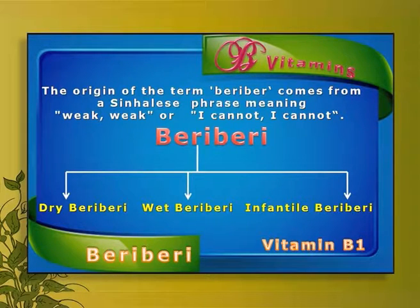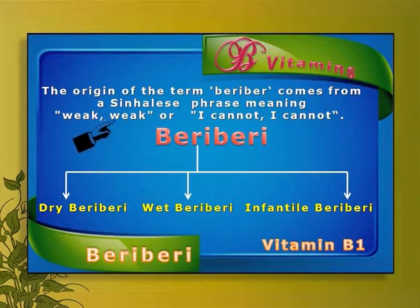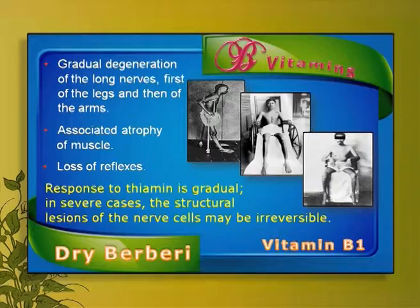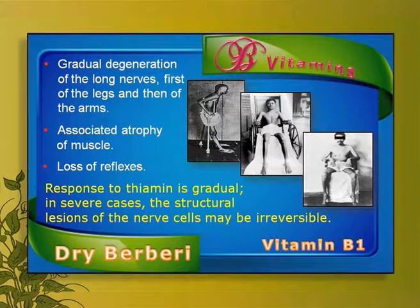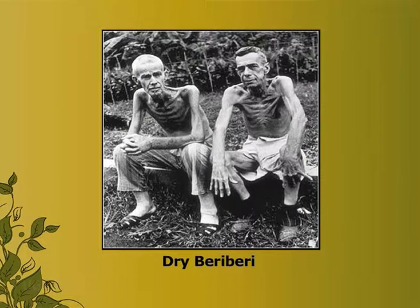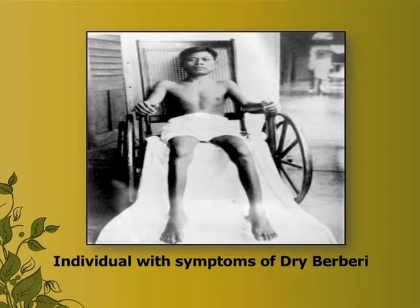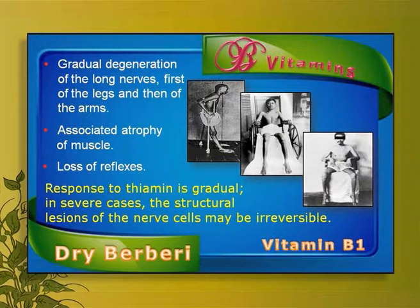There are three types of beriberi: wet beriberi, dry beriberi, and infantile beriberi. The word beriberi comes from the Sinhalese word meaning weak or 'I cannot.' The symptoms of dry beriberi include gradual degeneration of the nerves, especially the long nerves present in the hands and legs. There is concomitant atrophy of the muscles innervated by these nerves and loss of reflexes. Upon administration of thiamine, the disease conditions improve, but irreversible damage already done to the muscles and nerves is difficult to repair.